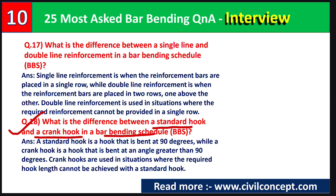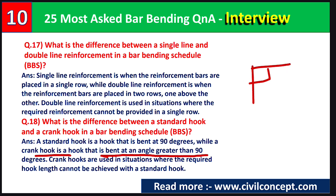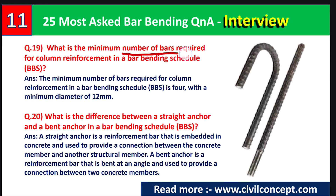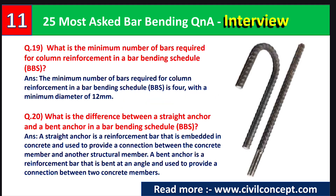Question number eighteen: a standard hook is bent at 90 degrees, while a crank hook is bent at an angle greater than 90 degrees — such as 125 degrees or 135 degrees. Crank hooks are used in situations where the required hook length cannot be achieved with a standard hook. Question number nineteen: the minimum number of bars required for column reinforcement in a bar bending schedule is 4, with a minimum diameter of 12 mm. For a rectangular column, a minimum of 4 rebars must be used.